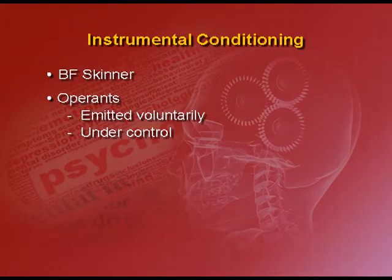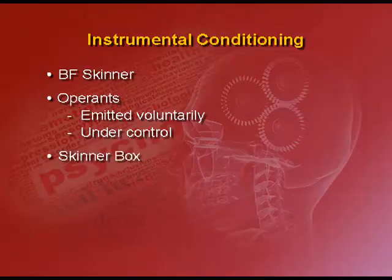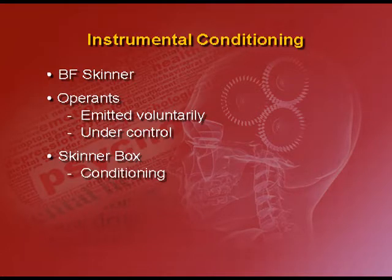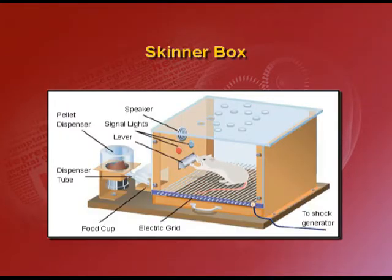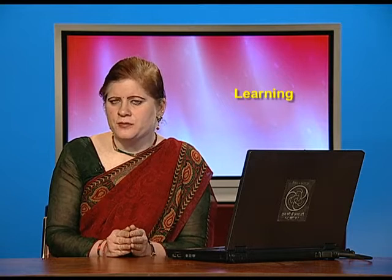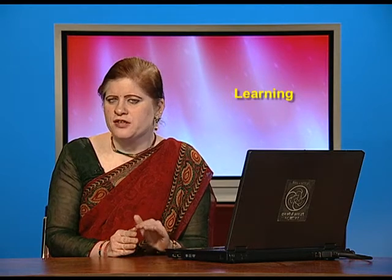The experiment used by B.F. Skinner to establish operant conditioning was conducted in a small laboratory, with a rat as the subject. There was a Skinner box in which the rat was kept. This box had a small funnel-like tube in which food pellets were inserted, and there was a lever attached at the bottom of this funnel.